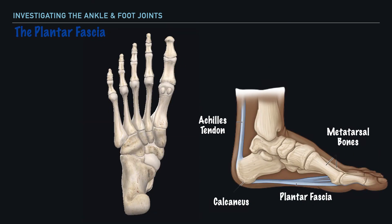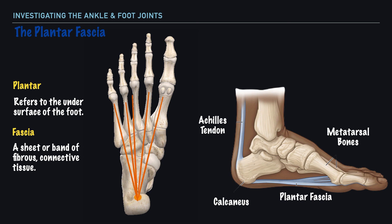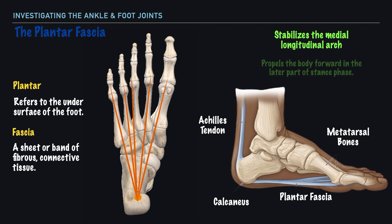An additional structure that we should give our attention to is the plantar fascia. The term plantar refers to the undersurface of the foot, and on the undersurface of the foot we have a fascia, which is a sheet or band of fibrous connective tissue. It's this plantar fascia that extends from the calcaneus to the proximal phalanxes of the toes, and its function is in stabilizing the medial longitudinal arch and propelling the body forward in the latter part of the stance phase.